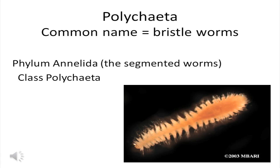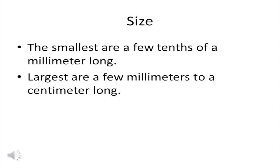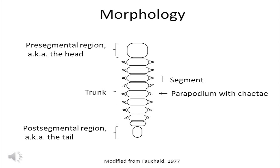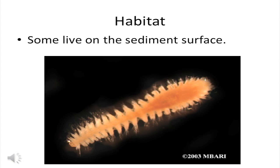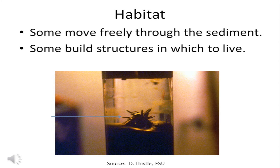Let's move up the size class and talk about the macrofauna. Polychaeta is the group that's most abundant of all the macrofauna. They have the common name bristle worms, but deep sea biologists just call them polychaetes. They are a class of the phylum Annelida. The smallest polychaetes are a few tenths of a millimeter long, while the largest can be a few millimeters to a centimeter long. Morphologically, polychaetes have a pre-segmental region called the head, followed by a segmented trunk, and then a post-segmental region called the tail. Each segment has a parapodium on each side, and the parapodia bear chaetae. Polychaetes use a wide array of habitats — some live on the sediment surface, some move freely through the sediment, and some build structures in which to live.